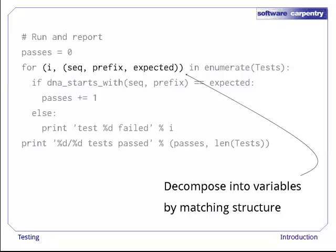In our case, the elements of tests have three parts. We can extract the index and those three parts in a single step, as shown here. The first time through the loop, I will be assigned 0, while seq, prefix, and expected will be assigned the three parts of our test. The next time through the loop, I will be assigned 1, and so on.